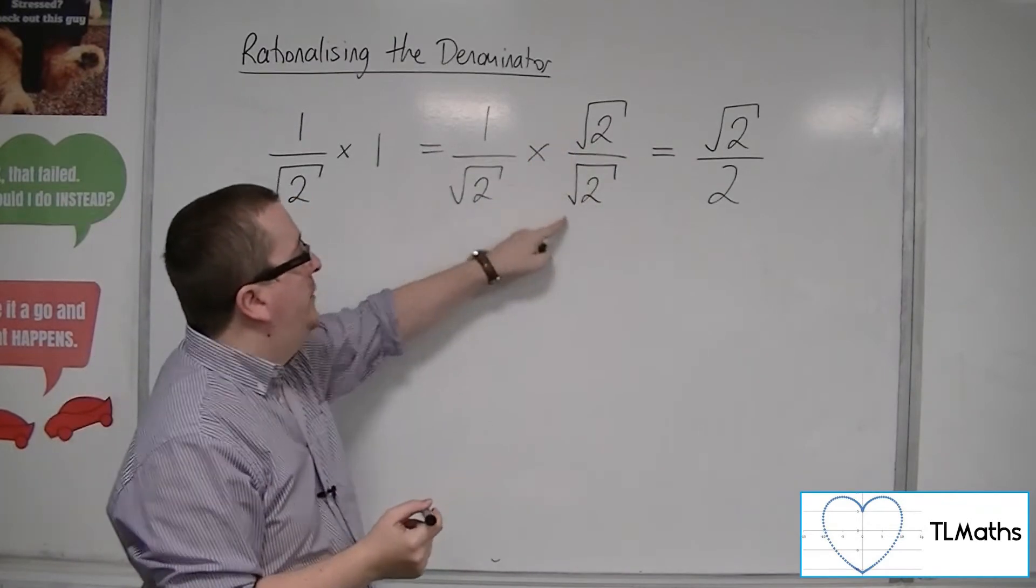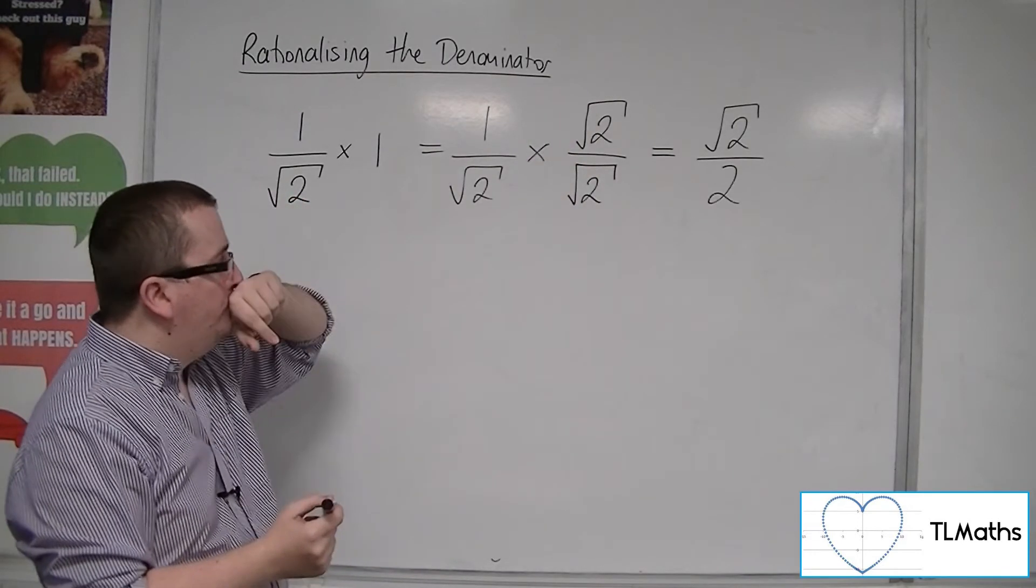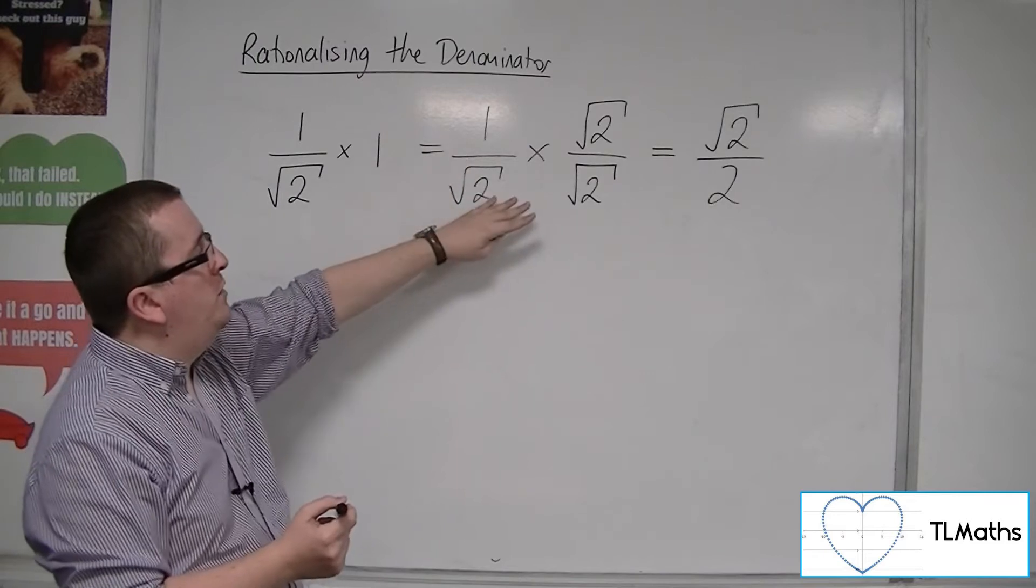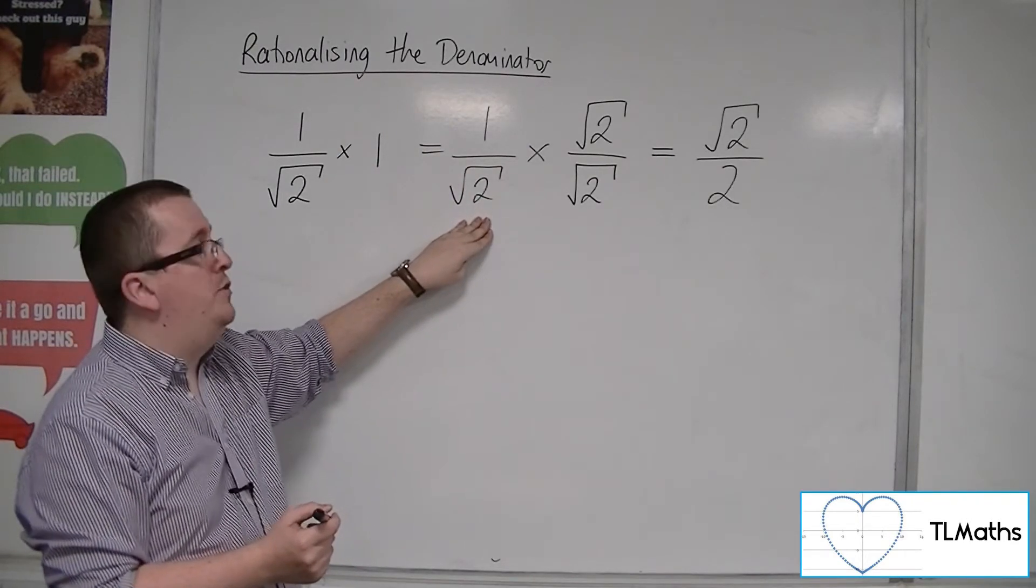And it's really our choice about which amount this is in the numerator and denominator. But we chose root 2 specifically because we knew that it would cancel out that root 2 there.